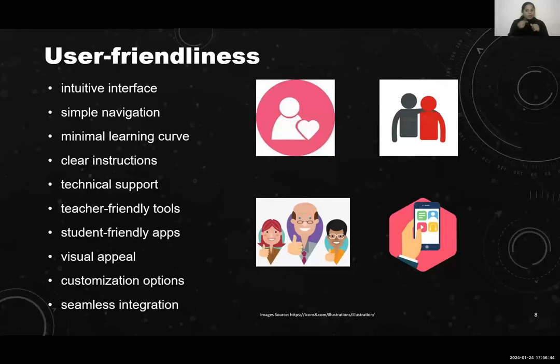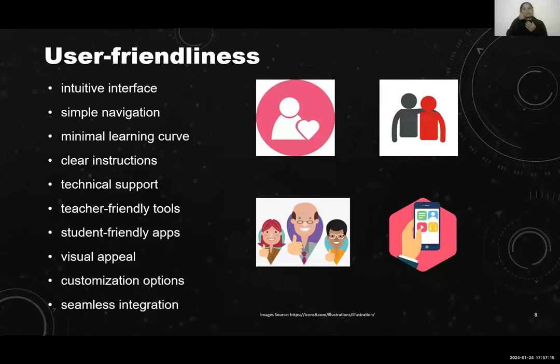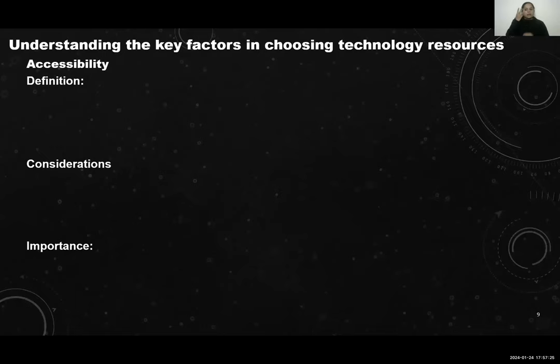To help you remember whenever you're choosing a technology resource for your classroom, build up this acronym: ARU — Accessibility, Relevance, and User-Friendliness. How do you remember it? Are you choosing the right tool for your class in the learning context, aligning with many things? Now as we move forward, we have understood the three key factors. Let's understand what they mean individually so that we know what to consider and why these three are so important as key factors.